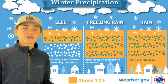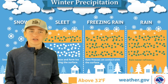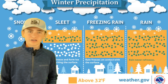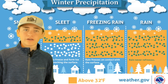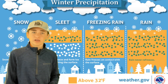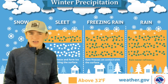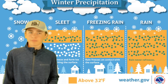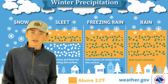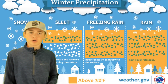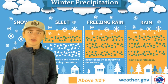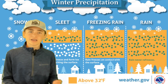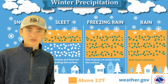It is important to be able to differentiate between sleet and freezing rain in order to properly prepare for and respond to these weather conditions. By understanding the characteristics of each type of precipitation, we can take the necessary precautions to ensure our safety and well-being. This has been What is Weather?